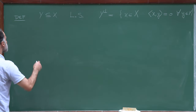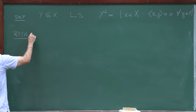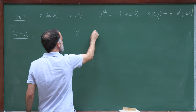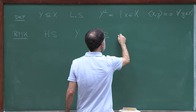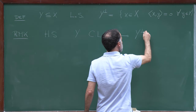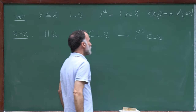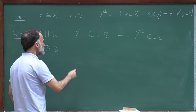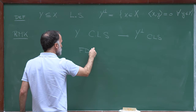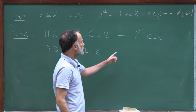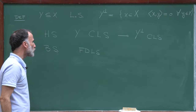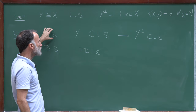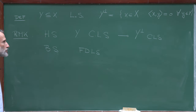Let me complete this short lecture with a remark. We proved that in Hilbert spaces, if Y is a closed linear subspace, then Y⊥ is also a closed linear subspace. This is not true for Banach spaces in general — in Banach spaces, it holds for finite-dimensional linear subspaces, but not in general. This is a property which holds in Hilbert spaces but not in general Banach spaces.